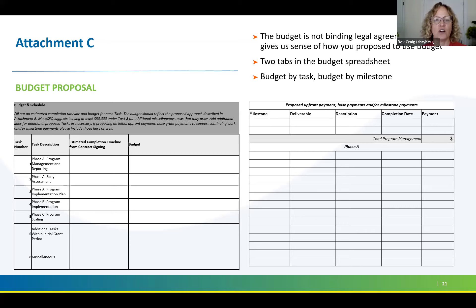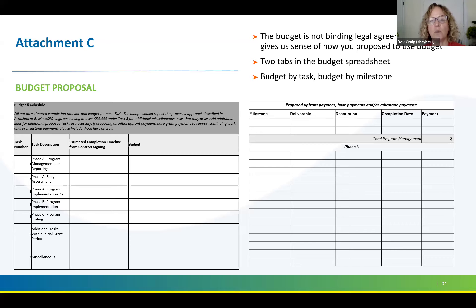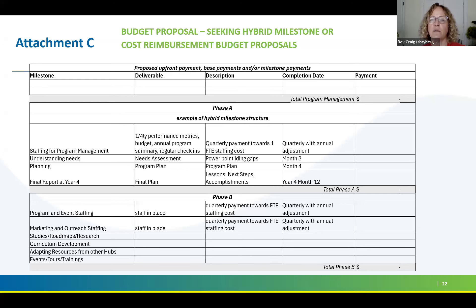In the spreadsheet there are two tabs. One is a summary by task of the budget and the timeline you expect. The other is where you get more detailed about what you're proposing across the different phases. We do allow some proposal for upfront payment to get started — especially if you're going to be hiring staff — as well as some base payments in coordination with milestone payments.